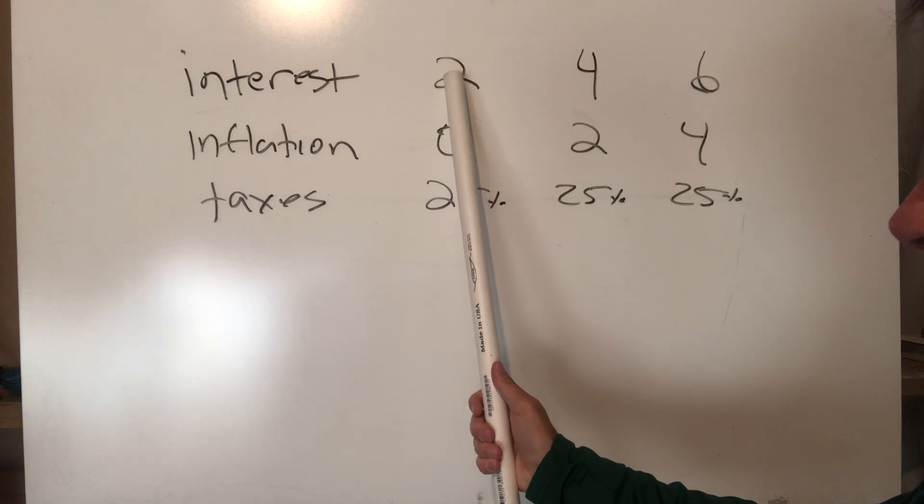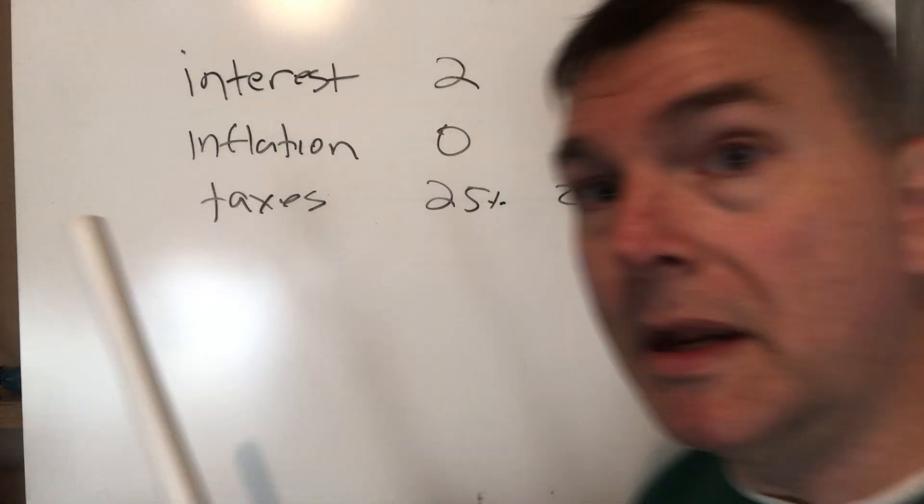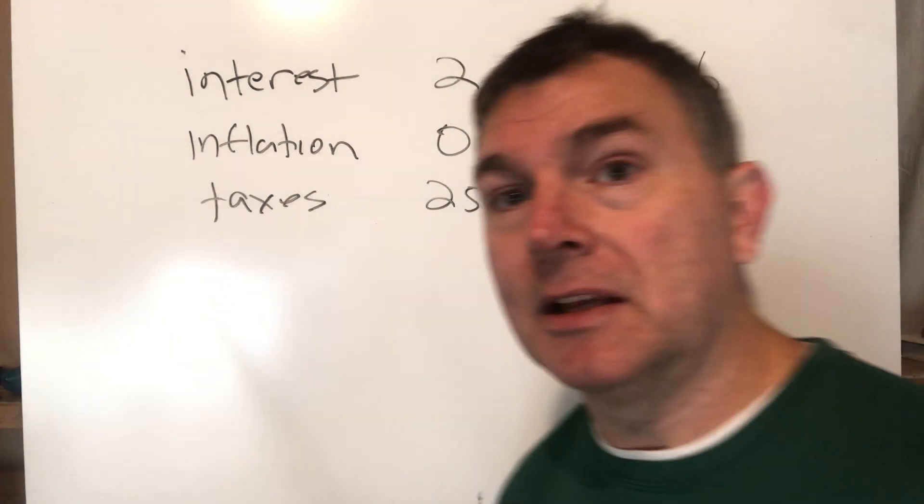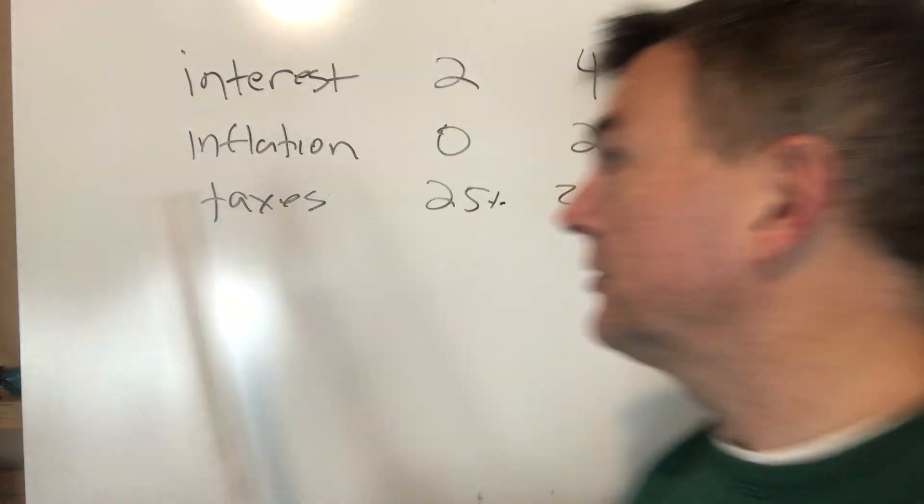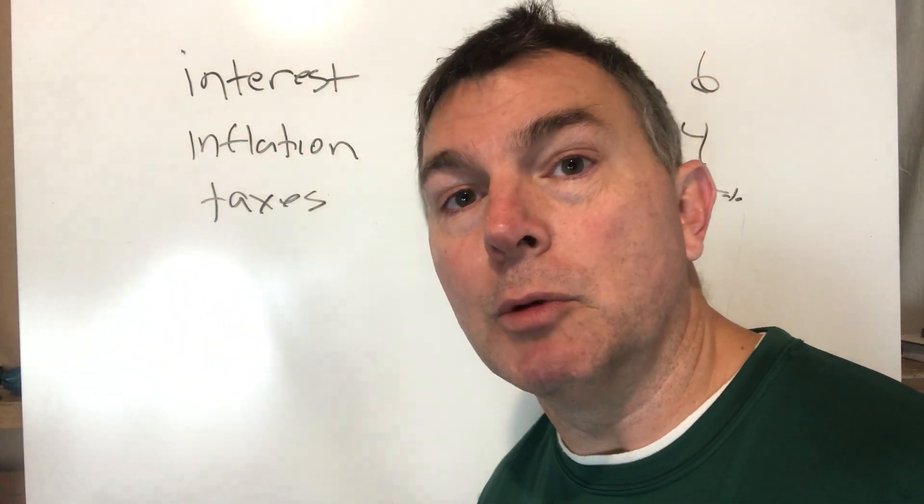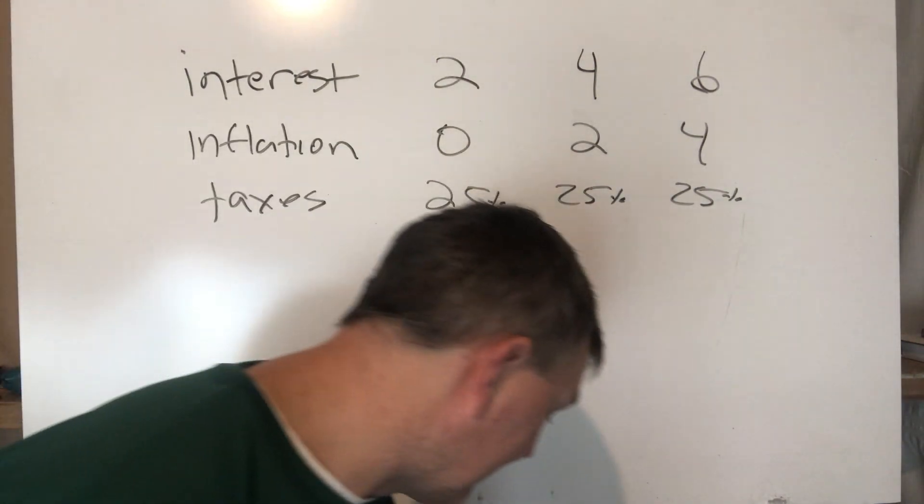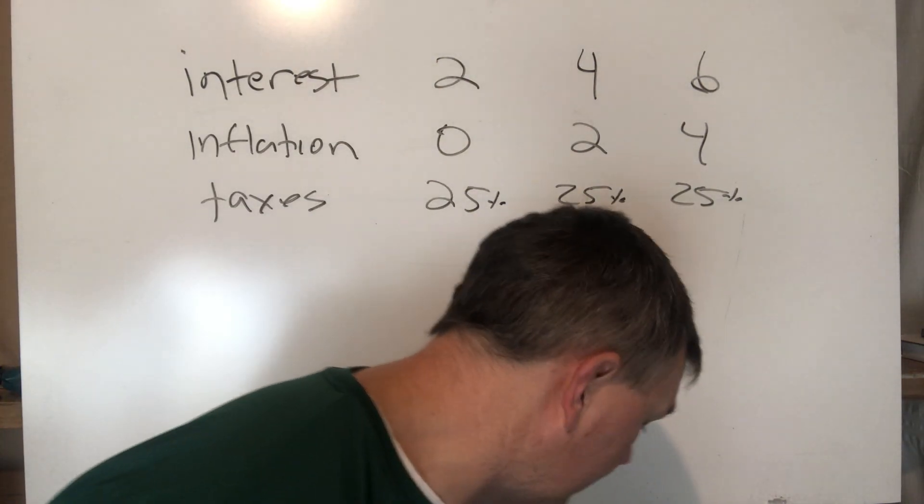Unfortunately, people think they take interest minus inflation and pay tax on that. So in this case it's always 2%, my net return after inflation, and I get taxed 25% on that net. So your total returns would be all the same—it'd be 1.5%. That's not how this works, though. This is where the system is so stacked against the long-term investor.